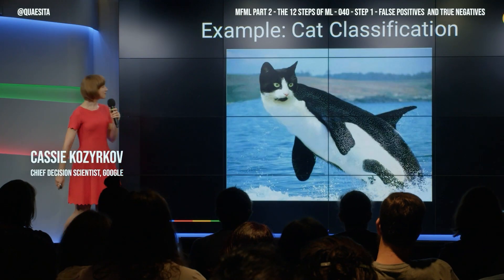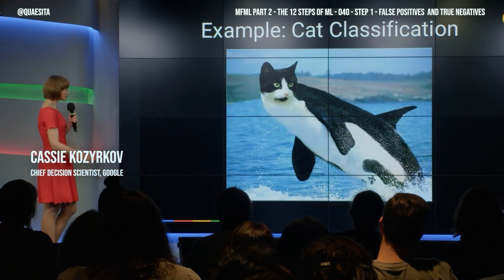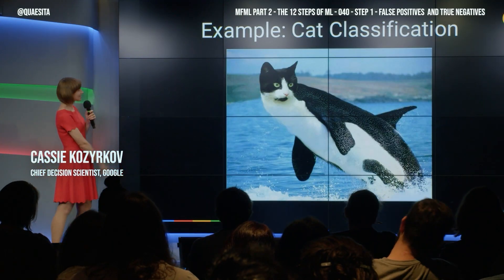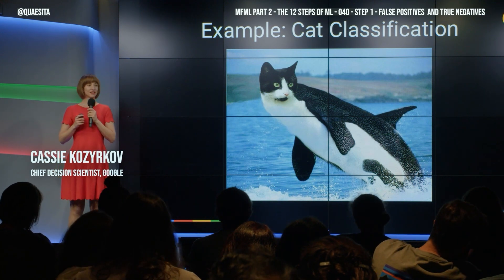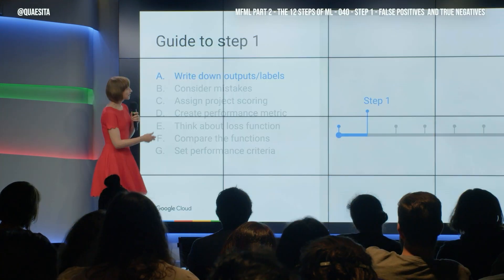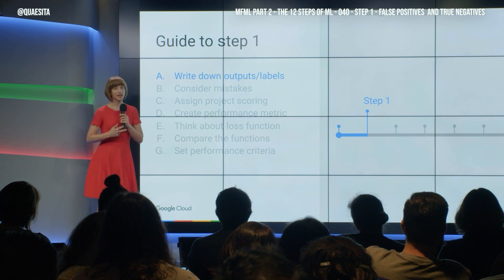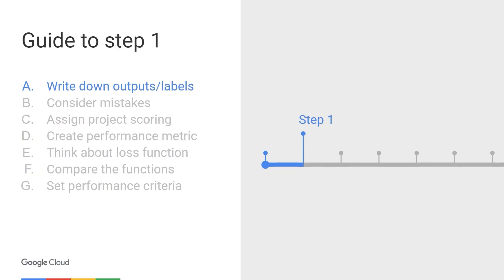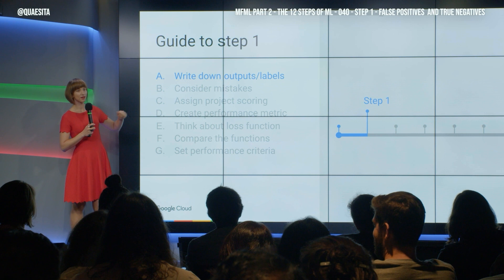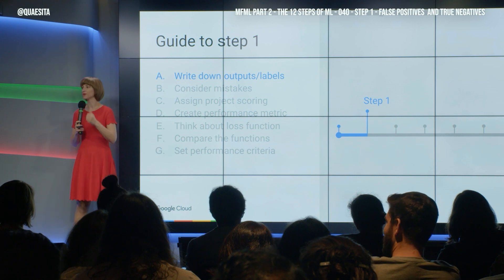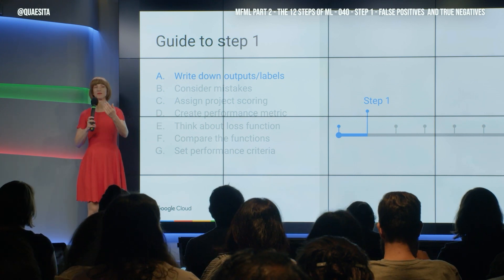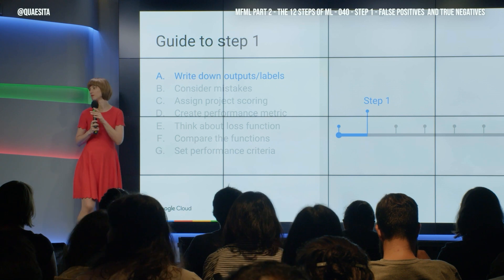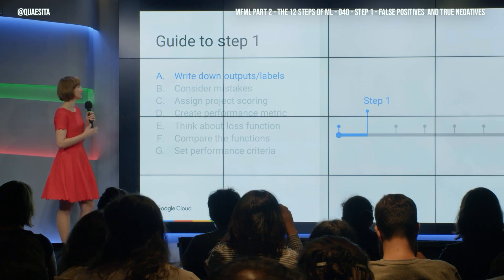Let's do a quick example and learn some basics with cat classification. We're going to build a cat classifier, and we have a little guide here. This is a pen and paper step — you can do most of step one with pen and paper. You don't need special expertise. You don't need to be a mathematician or a programmer. Anyone with common sense can do this.